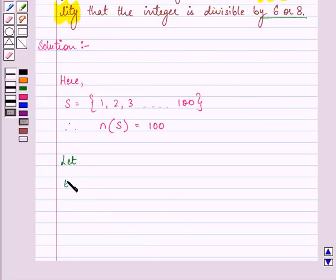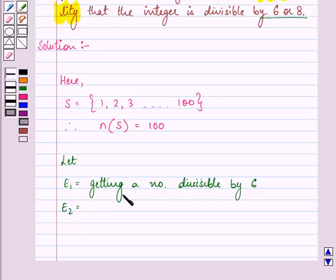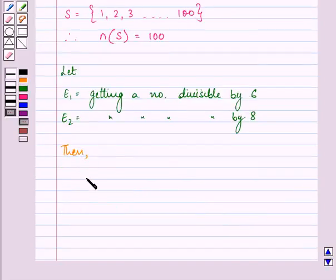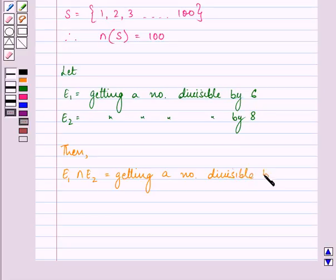Further, let E1 be the event of getting a number divisible by 6 and let E2 be the event of getting a number divisible by 8, right?